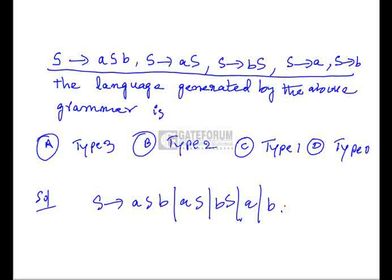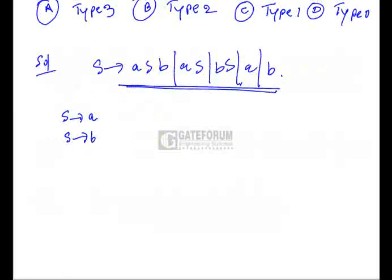If the defined language belongs to a regular language, then it will be type 3; otherwise it may be type 2, type 1, or type 0. We need to find out the language generated by this grammar first. The smallest strings generated are 'a' and 'b'.